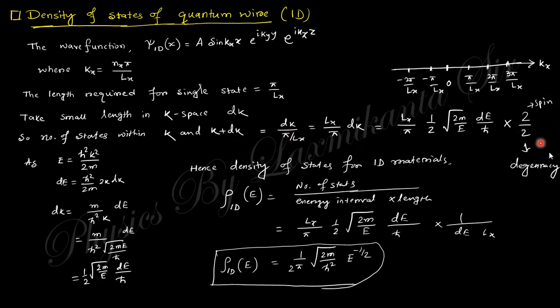So the number of states within k and k plus dk will be dk divided by π/Lx. Finally you obtain this type of expression. Converting to energy space, you obtain this expression, and the density of states will be like that.